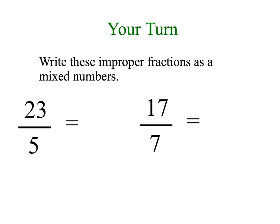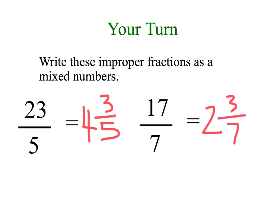Now it's your turn. I want you to write these improper fractions as mixed numbers. Pause the video, write them down, and see if you get the same answer as me. Five into twenty-three: twenty-three divided by five — five fours are twenty, so that's four whole with three left over. So you should have got those answers. Hopefully you now understand how to convert mixed numbers to improper fractions and back again. Thank you.